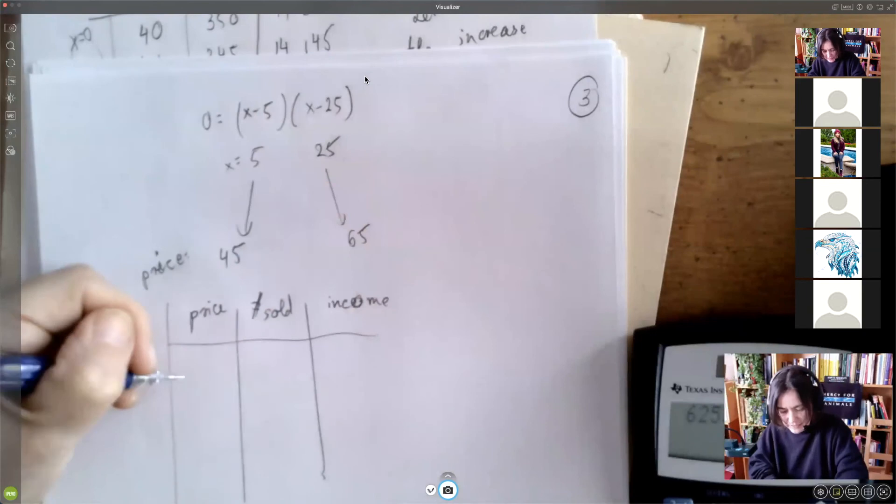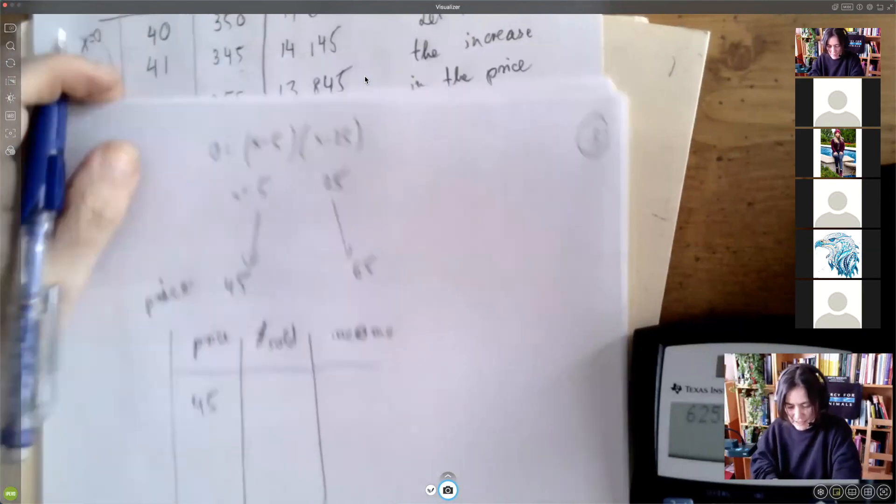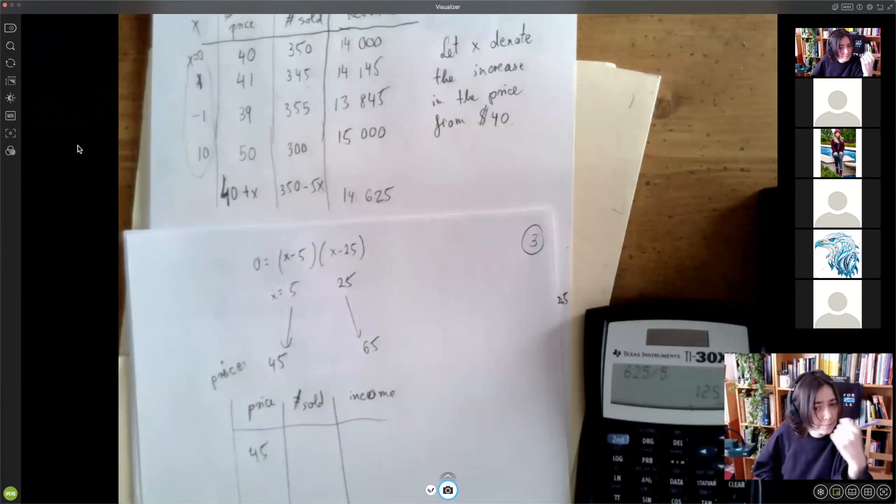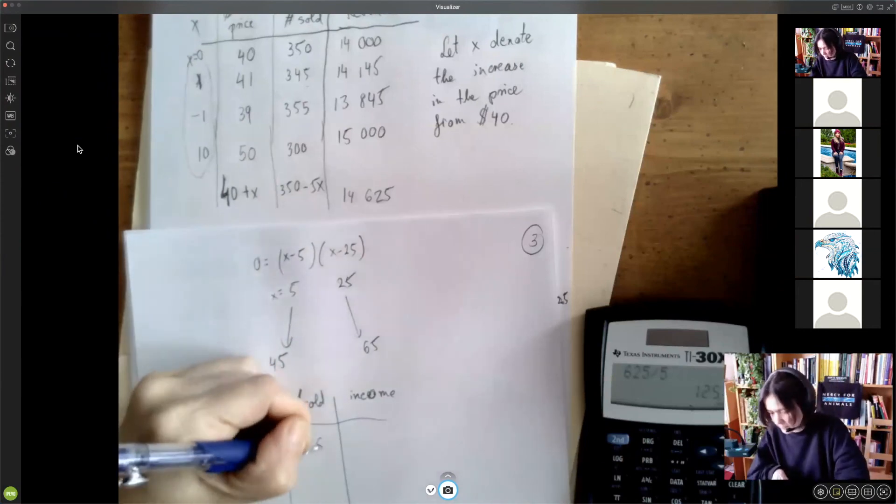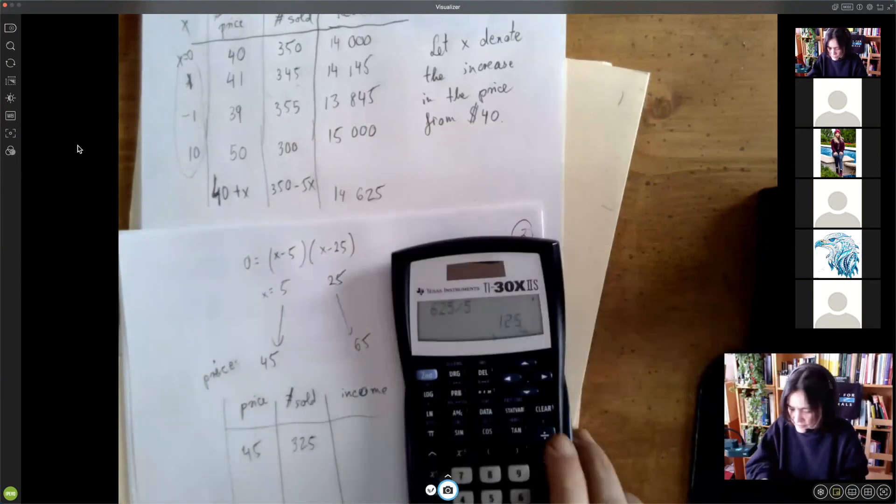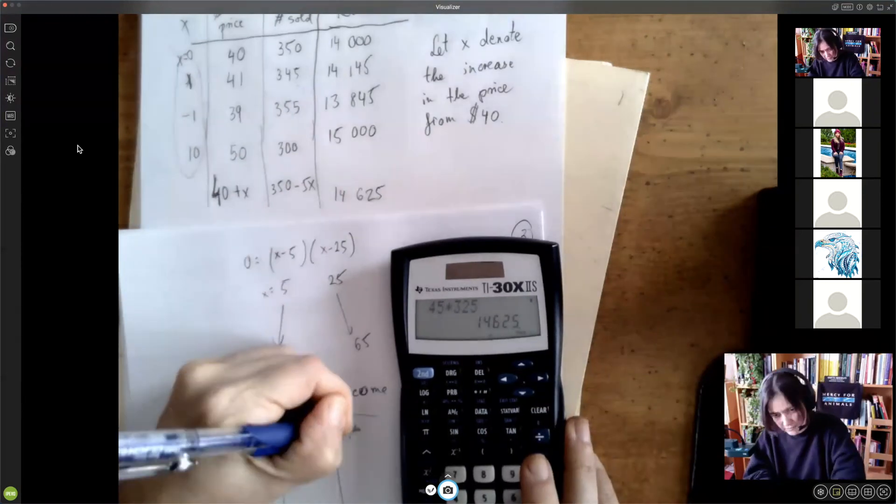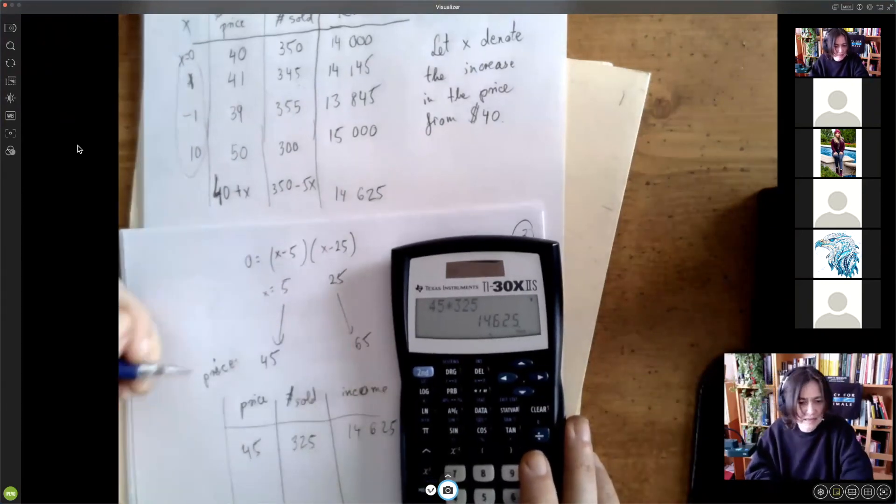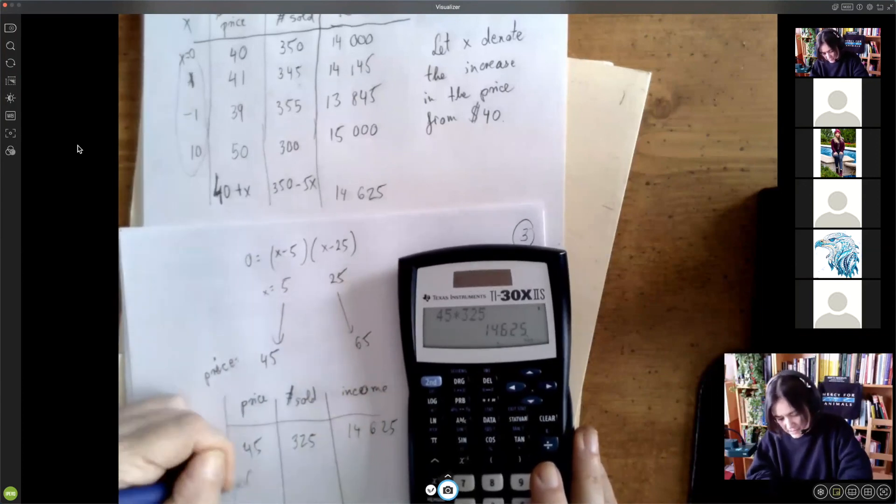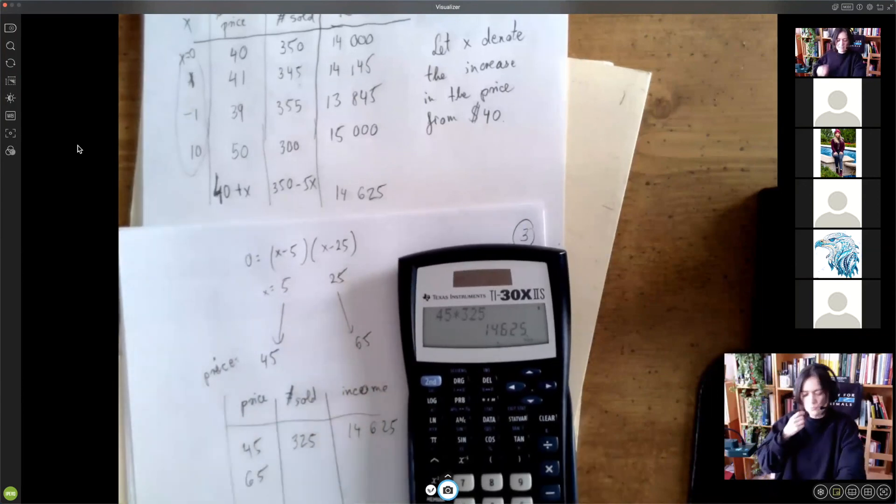I believe they should both work. So if the price is 45, how many are we going to sell? 325. And then so when we multiply these two, we should get that number. So it works.